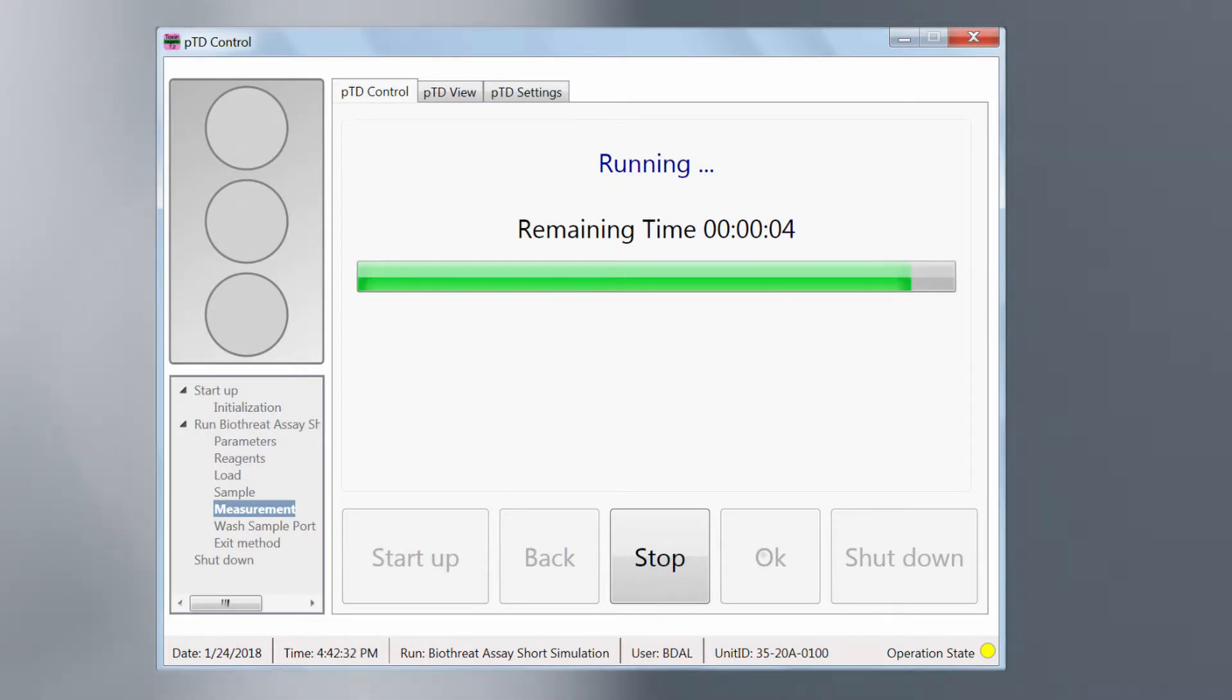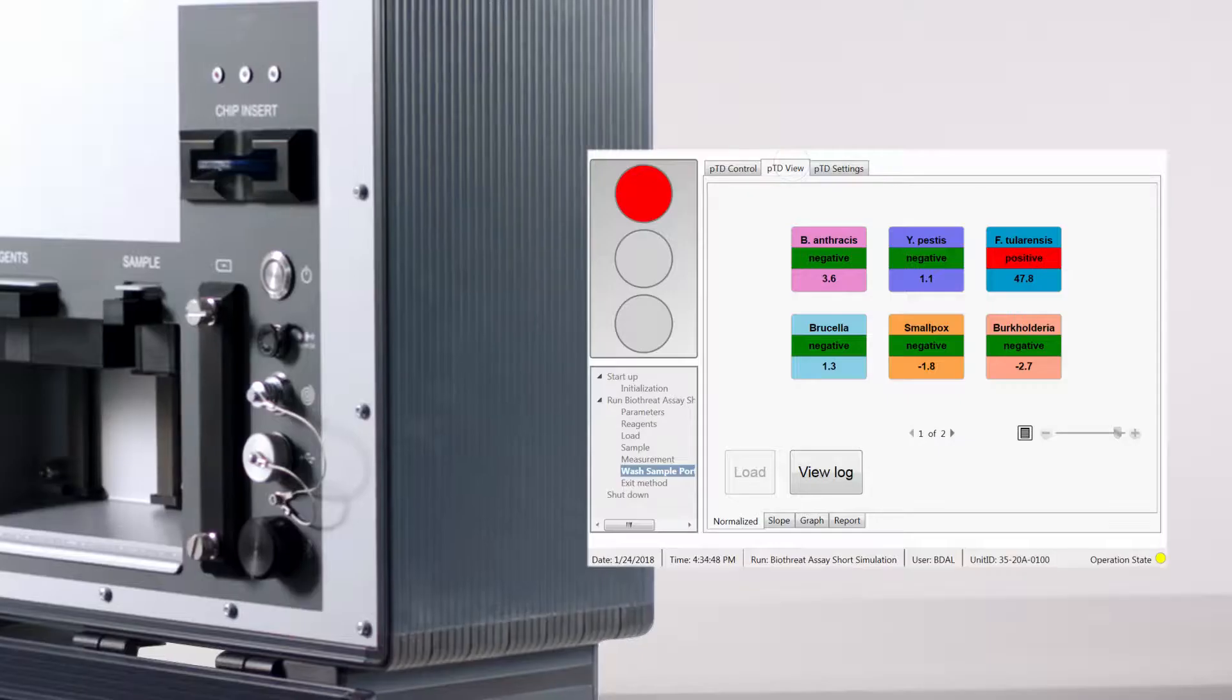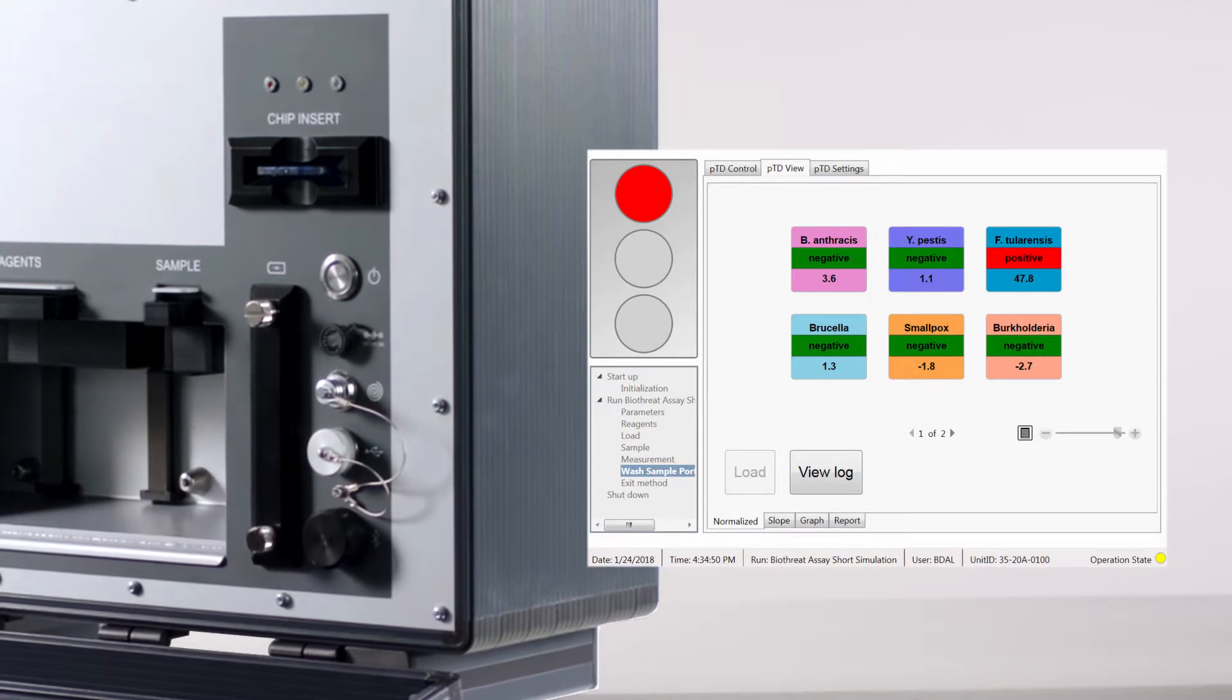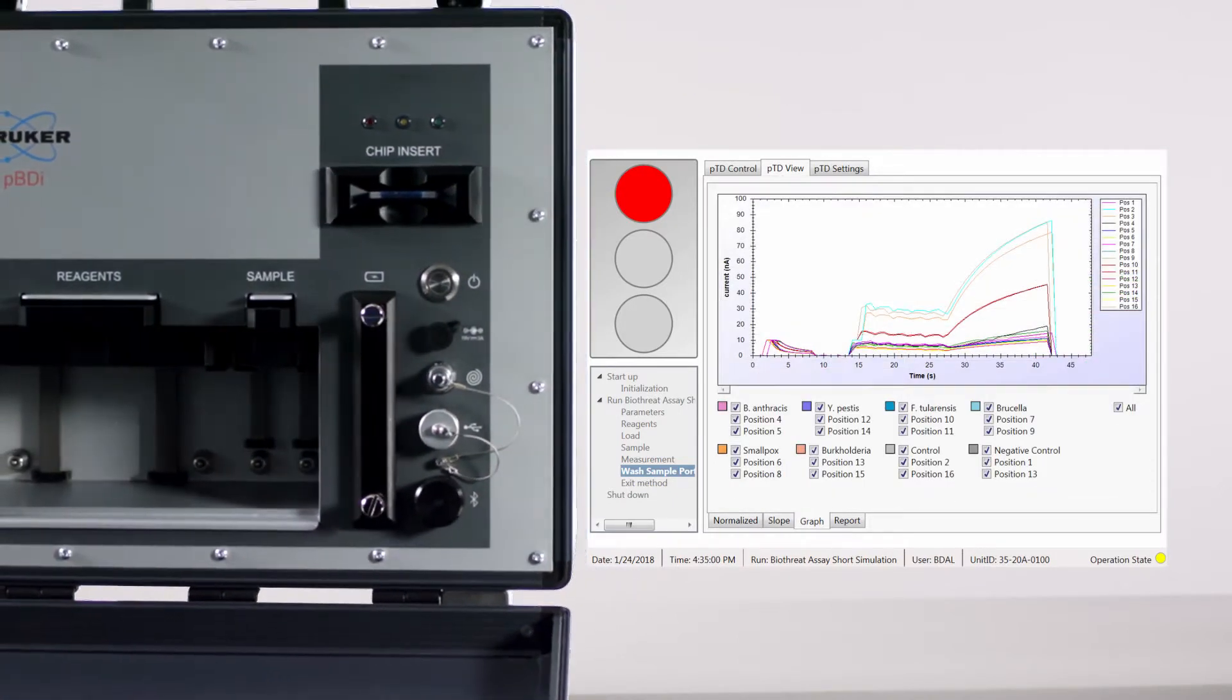The results are then displayed by a traffic light-based color code in combination with a text warning message. Furthermore, results are displayed in more detail in one of three forms: Normalized, Slope, and Graph.